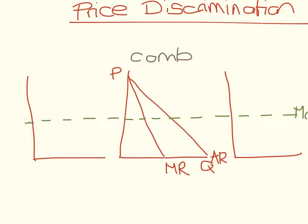Same rule applies: marginal cost equals marginal revenue for profit maximizing output. We're assuming that this firm wants to profit maximize. This would be the quantity, this would be the price.